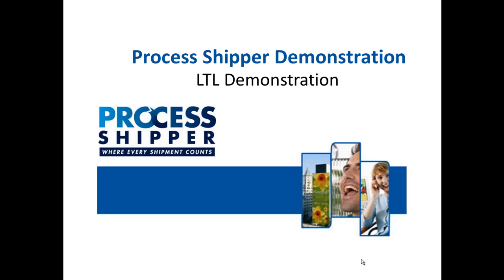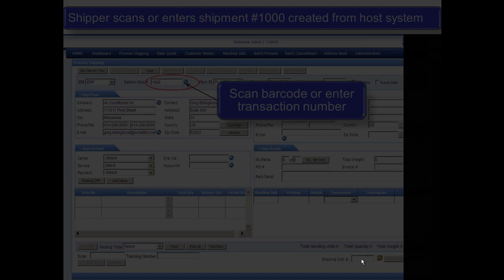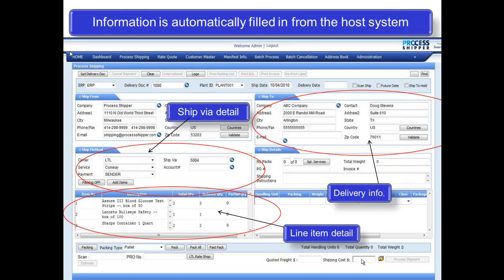Now let us walk through an LTL shipment together. Here the customer service representative is creating shipment record number 1000 within the host system. It has the ship-to address, as well as the ship via, and all of the items which will be shipped. At the shipping station, the shipper scans shipment number 1000, which was created from the host system. The shipment information is then automatically populated into Process Shipper from the host system.